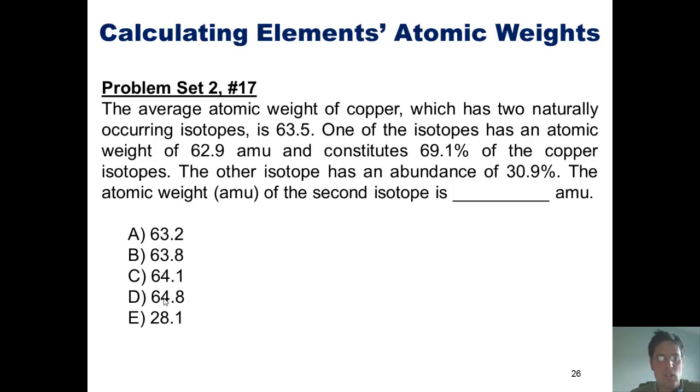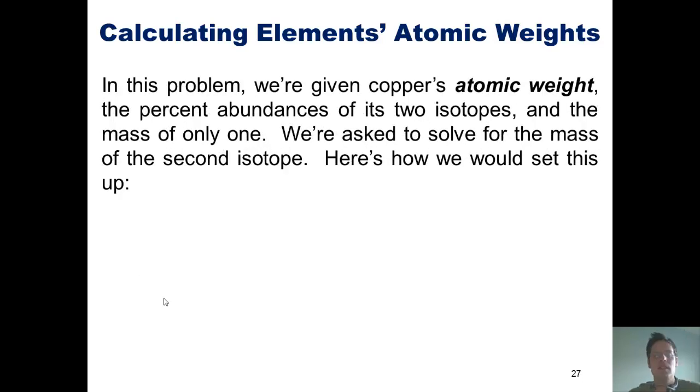So, how in the world would we do this? Well, in this problem, we're given copper's atomic weight, the percent abundances of its two isotopes, and the mass of only one. We're then asked to solve for the mass of the second isotope. Here's how we would set this problem up.